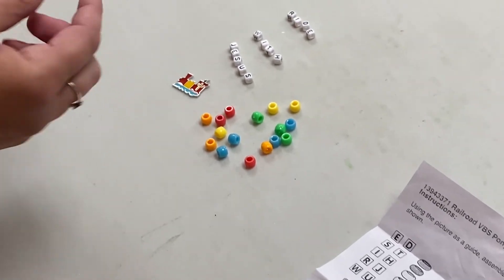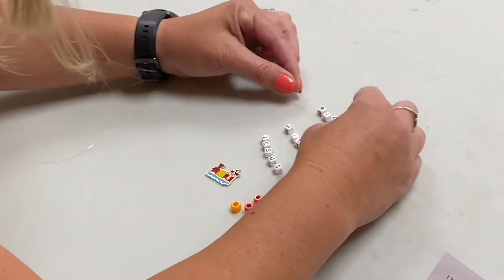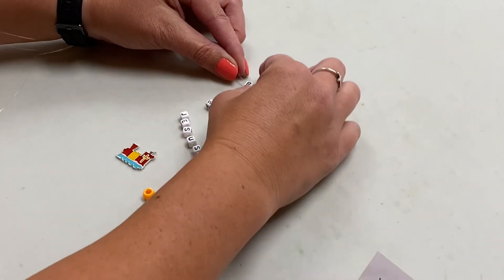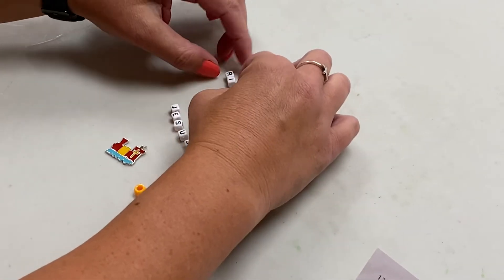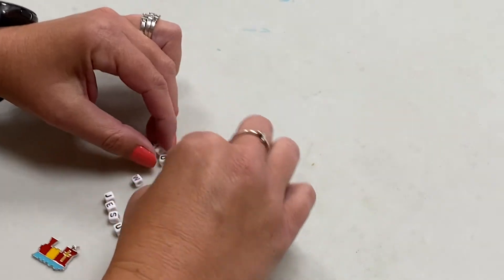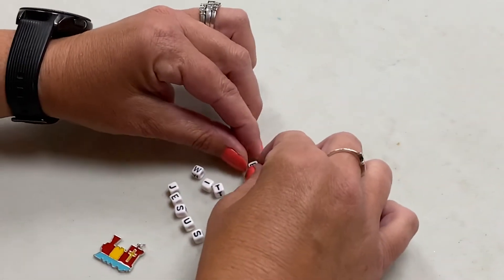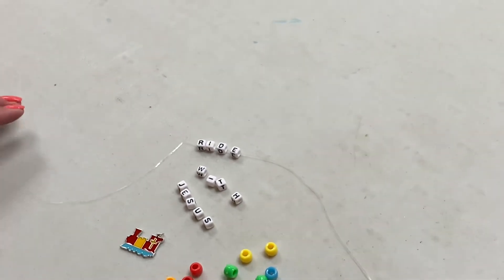Okay, so what I find easier is to go ahead and start with one end. If you actually line everything up, leave your string on the table and feed your yarn through all the letters. That way it stays on the table and you don't accidentally pull it off.